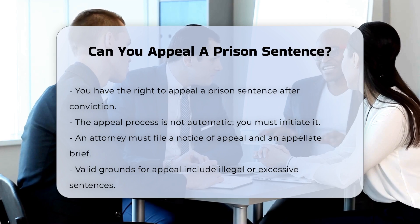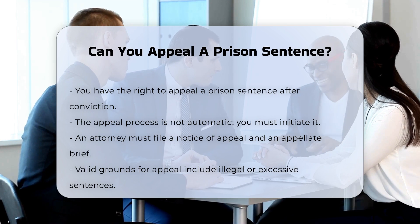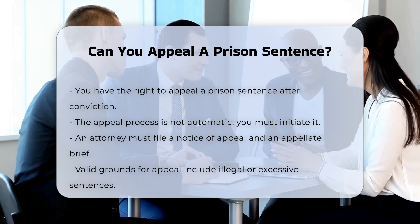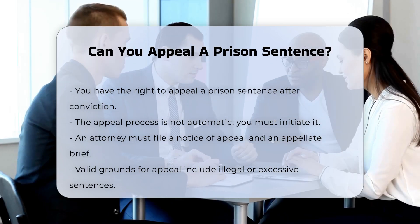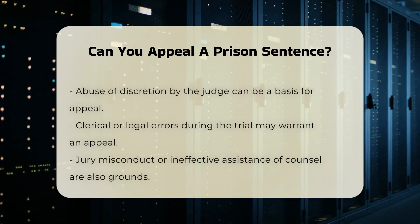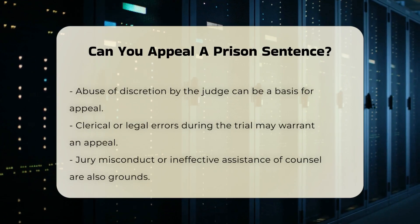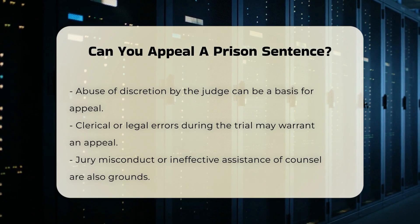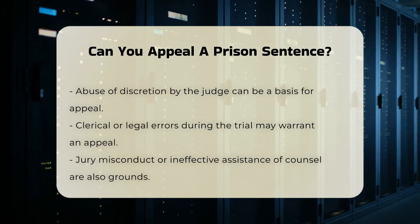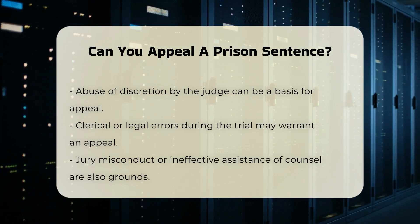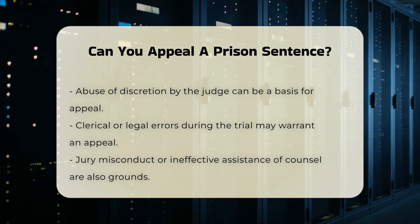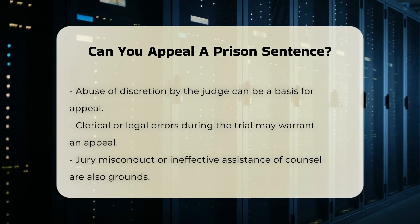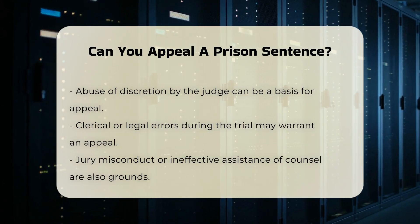Grounds for appeal. To appeal a sentence, you need to have valid grounds. These can include: the sentence was illegal, unconstitutional, or unreasonably excessive; there was an abuse of discretion by the judge, such as imposing a sentence above the maximum allowed by law; there were clerical errors or legal errors made during the trial; or jury misconduct or ineffective assistance of counsel.